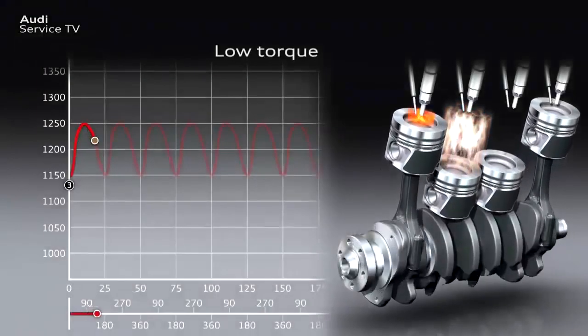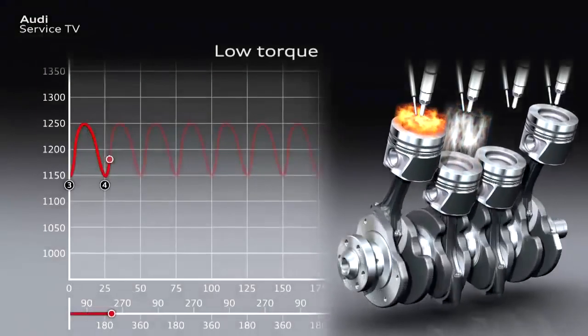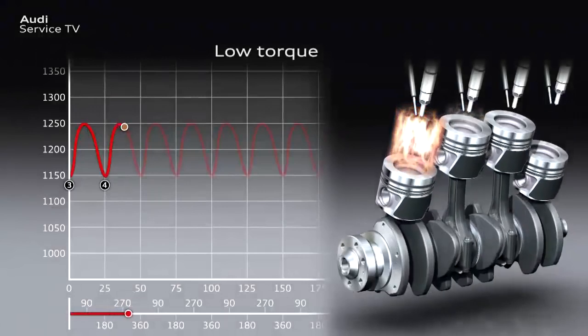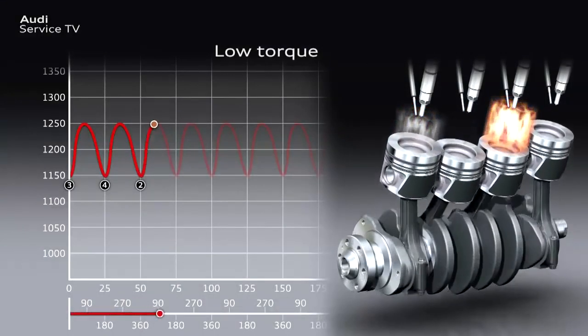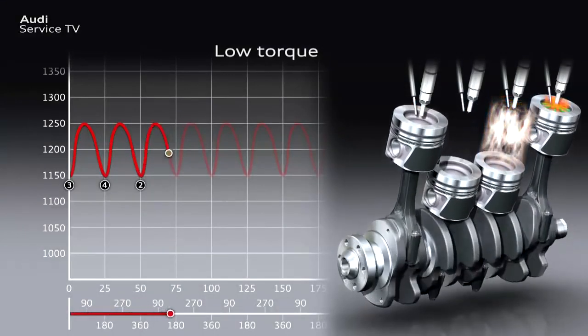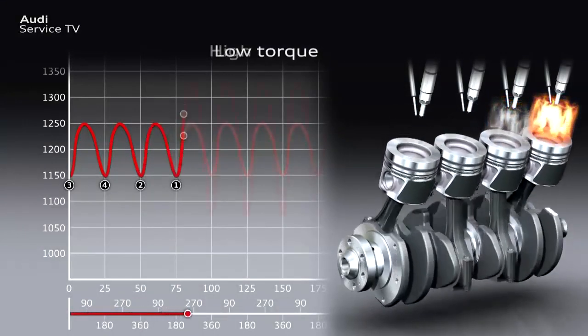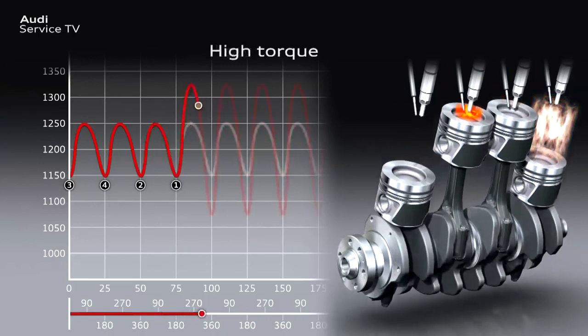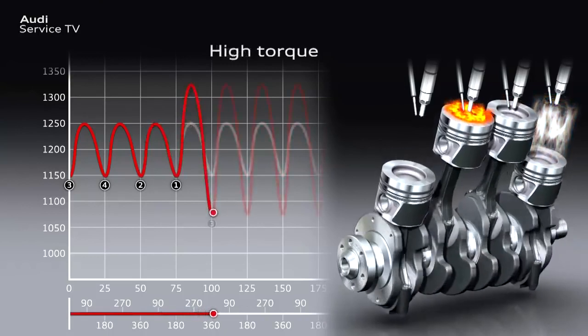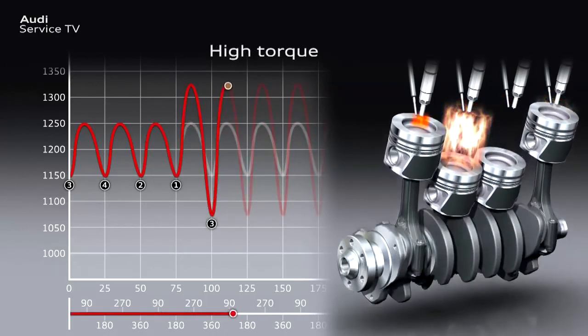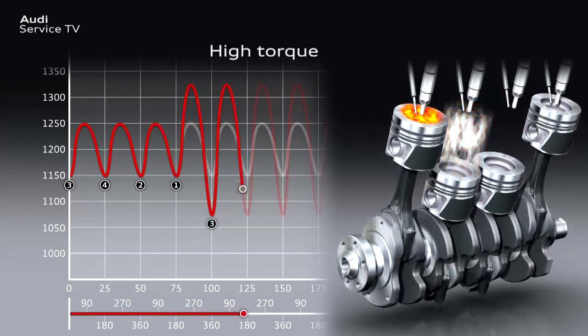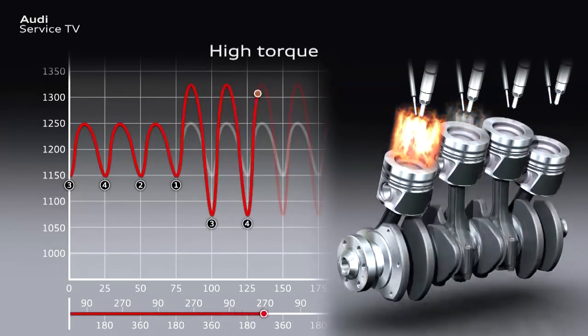However, this increase in torque, mostly combined with a restriction to four or six cylinders, leads to rotational speed irregularities in the engine, particularly at low speed, being much greater.